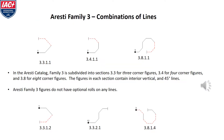Aresti Family 3 is composed of figures that are simply combinations of lines. Family 3 has section 3.3 for three-corner figures, 3.4 for four-corner figures, and 3.8 for eight-corner figures. Each of these groups of figures contains interior vertical and 45-degree lines, and the 3.8 figures contain a horizontal line.